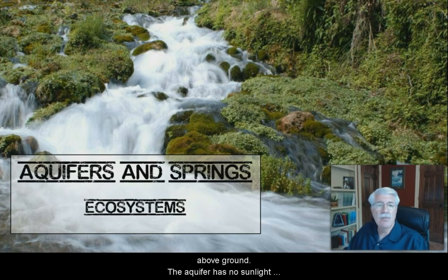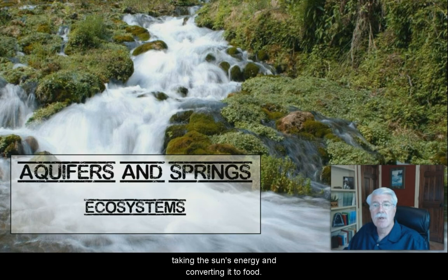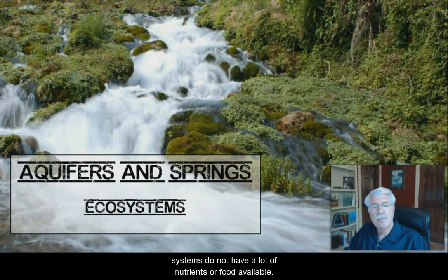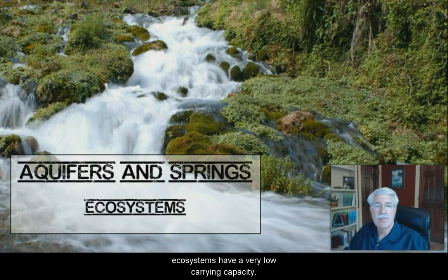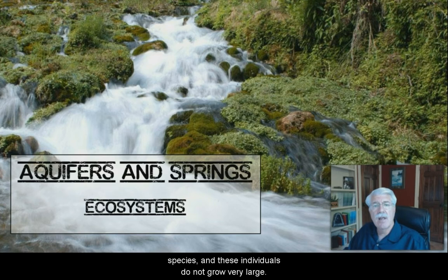The aquifer has no sunlight and therefore no green plants or algae with chlorophyll that take the sun's energy and convert it to food. Without these primary producers, the aquatic ecosystems underground don't have a lot of nutrients or foods available. Available food is constantly recycled among the organisms that are there, with only occasional additions of food from the outside. These underground ecosystems have a very low carrying capacity as a result. They can only support a few individuals of any one species, and these individuals usually don't grow to be very large at all.